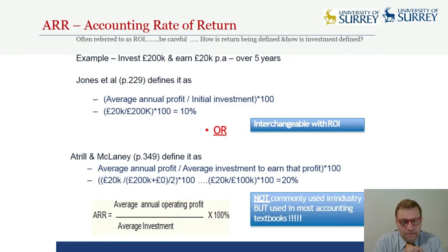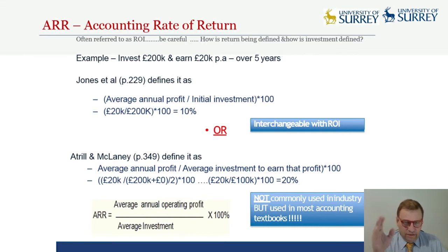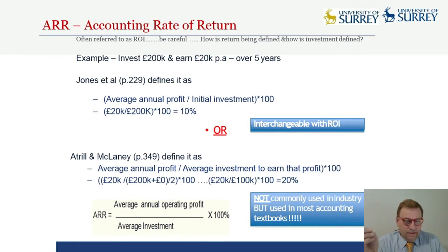I use some slides and as you can see there is a problem because there is no straight definition of this — the ARR. Some people use one definition, some people use different ones. It is shown here as annual profit divided by initial investment, or average annual profit divided by initial investment, giving one figure. But then some other people say it should be average annual profit divided by average investment, and that is a totally different story.